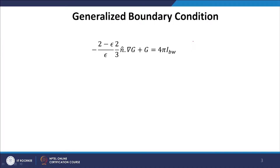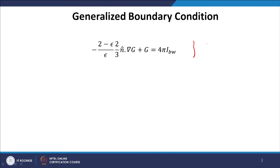The generalized boundary condition for a gray surface in 3 dimensions can be written as −(2 − ε)/ε · (2/3) n̂ · ∇G + G = 4π i_{b,w}, where ε is the emittance of the surface and n̂ is the unit normal vector at the local surface. This type of boundary condition is called a boundary condition of mixed type, or third kind, because both the gradient of G and the variable G itself appear in the equation. This can be easily solved using the finite volume method.